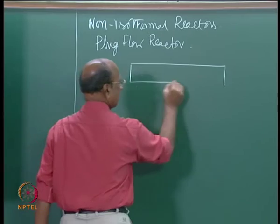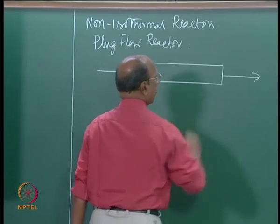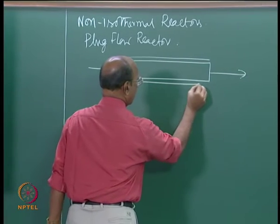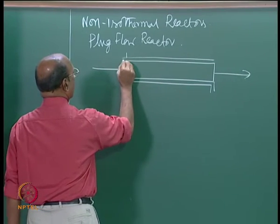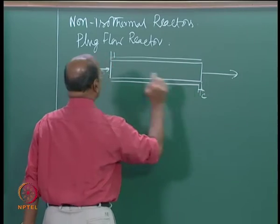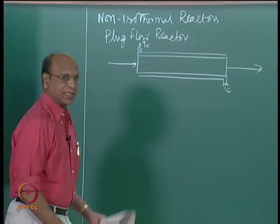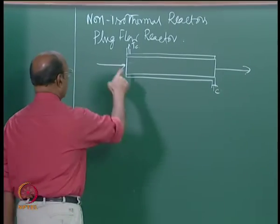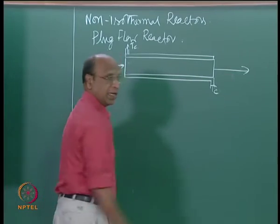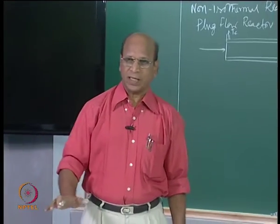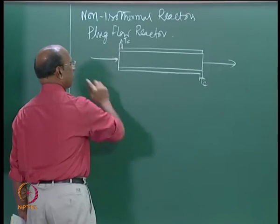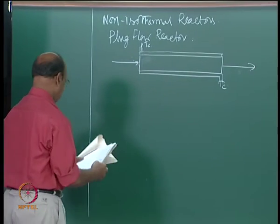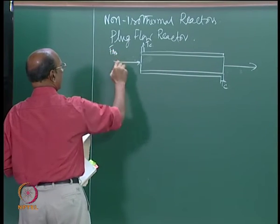We show the plug flow reactor as a tube with a jacket outside. For easy assumption, the coolant enters at T_c and leaves at T_c — otherwise I have to find the logarithmic mean temperature difference between T_c1, T_c2 and the reactor temperatures T_0 and T_final. Normally we do not account for that in simple problems unless we go to industrial problems. As usual, here we need the mass balance and heat balance.